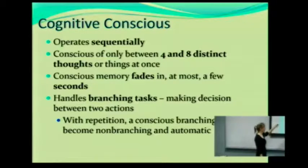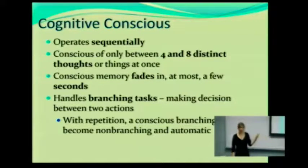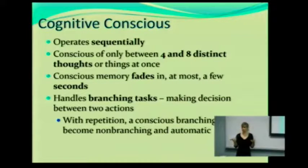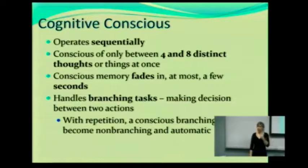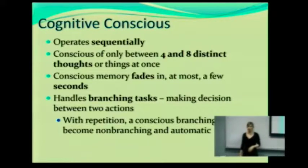The consciousness is very good at handling branching tasks — basically, making decisions. Raskin talks about making decisions between two actions, two tasks, but we can actually handle three or four tasks. You have to have that information in your awareness to make a decision and to reason about it. We also have a tendency to form habits. With repetition, a conscious branching task may become unbranching and automatic — in other words, it becomes a habit.